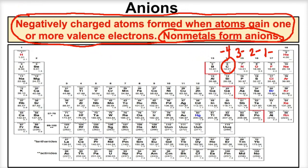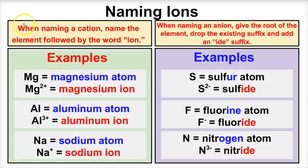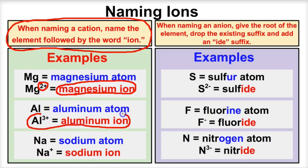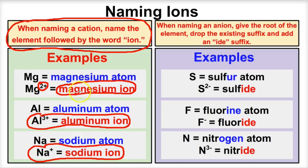Now let's look at how we name these ions. When naming a cation, simply name the element followed by the word 'ion.' For example, magnesium that has lost two electrons is called the magnesium ion. When aluminum loses three electrons, it becomes the aluminum ion — Al³⁺. When sodium loses one electron, it forms a sodium ion. Simply name the metal and follow it with the word ion.